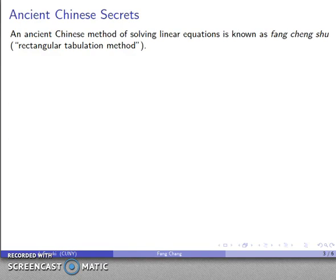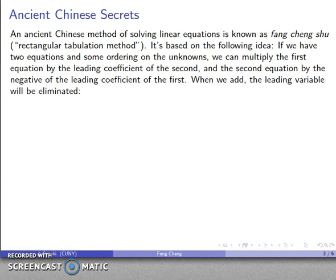So this is a method used in ancient China, about the 1st or 2nd century AD. And it's known as the fang chang shu, which translates as rectangular tabulation method. And it's based on the following idea. If I have two equations and some ordering of the unknowns, I can multiply the 1st equation by the leading coefficient of the 2nd,